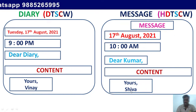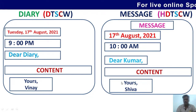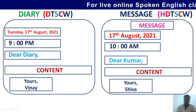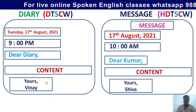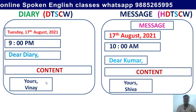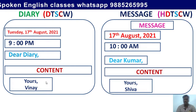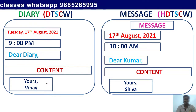Here we have Vinay and here we have Shiva — it all depends on the question. If the question says 'imagine you are Shiva,' write Shiva; if it says 'imagine you are Vinay,' write Vinay. In this way we can differentiate these two minor discourses — diary and message — so don't get confused. From now onwards, this is how we present these two minor discourses without any difficulty.